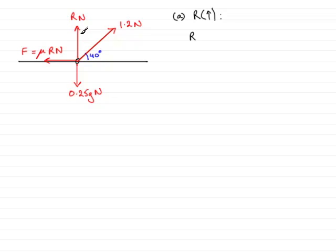Now because the 40 degrees is not contained in this angle in here, it becomes a sine. So it's 1.2 sin 40° and that's positive because it acts in the upward sense. So that's 1.2 sin 40°.